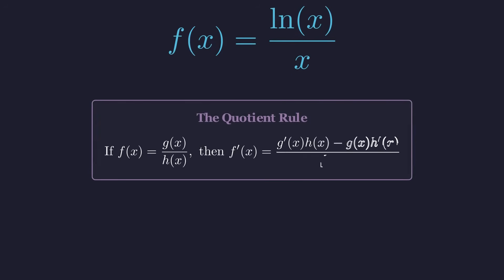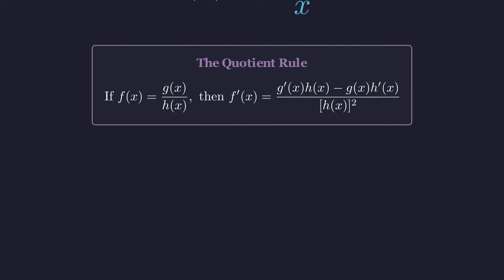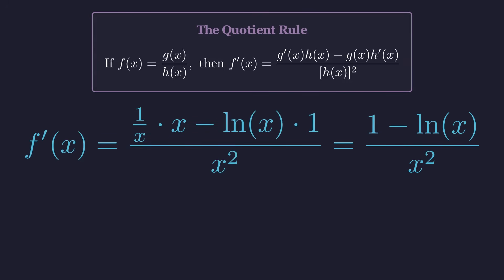Since we're dealing with a fraction, we'll need the quotient rule. The pattern is derivative of the top times the bottom minus the top times the derivative of the bottom, all divided by the bottom squared. Working through the algebra, we get this lovely expression, 1 minus the natural log of x, all divided by x squared.